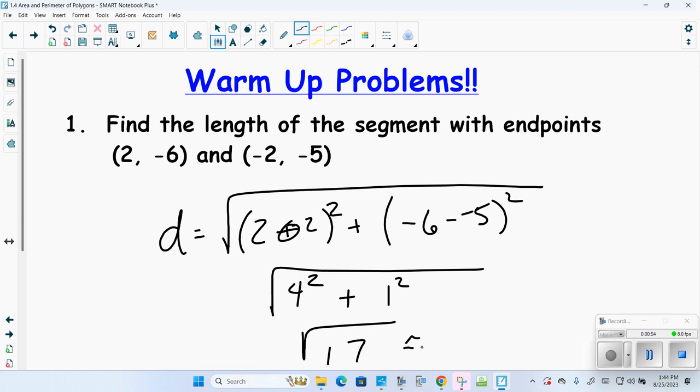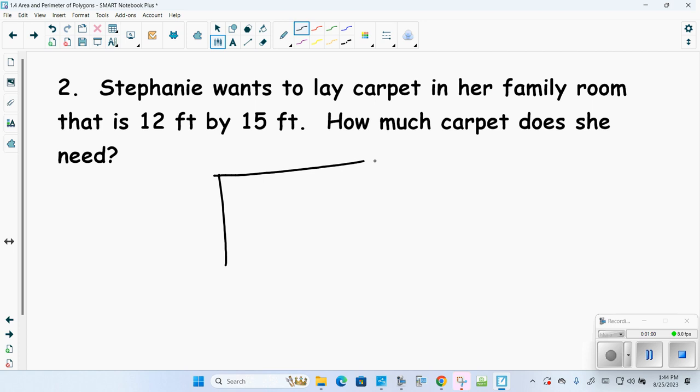Now we're going to start getting into basic area. Stephanie wants to lay carpet in her family room that is 12 ft by 15 ft. How much carpet does she need? Area of a rectangle is base times height. So 12 times 15 using a calculator would be 180 square feet. That's a little bit of a preview for what we're going to be talking about today.